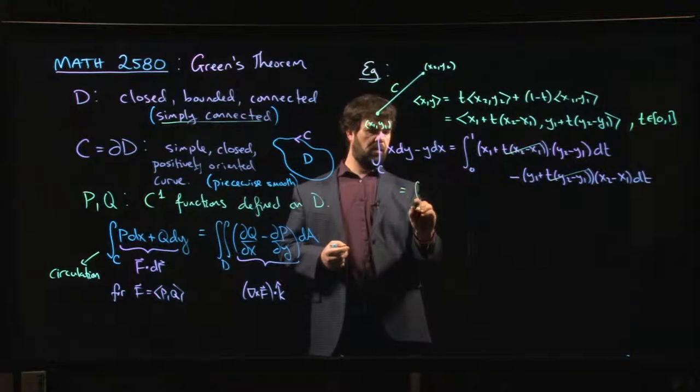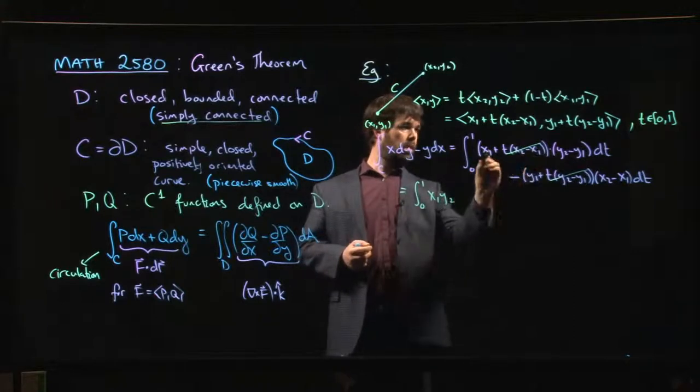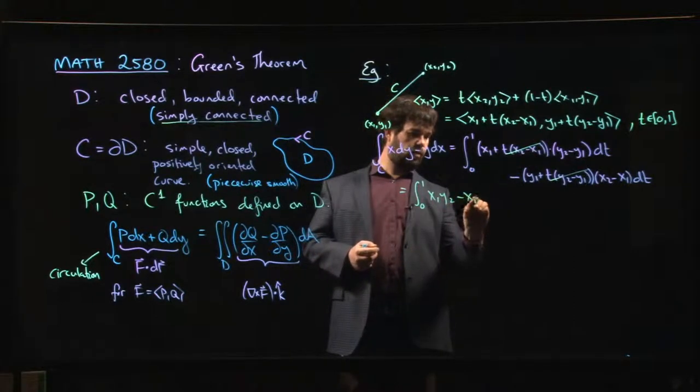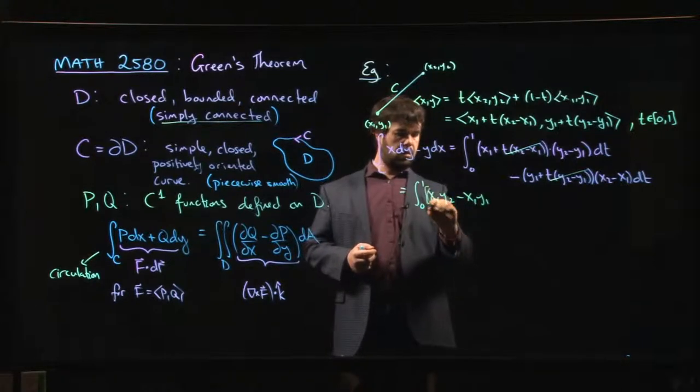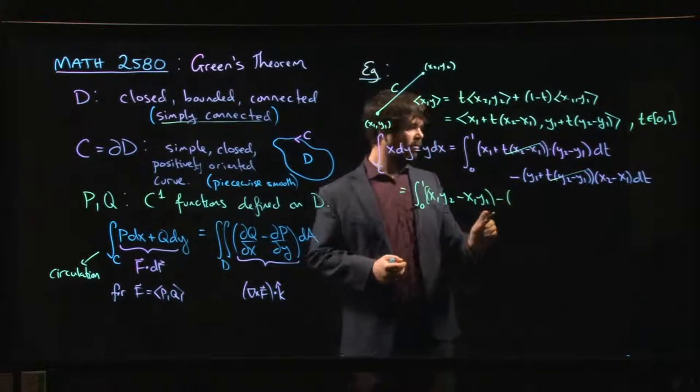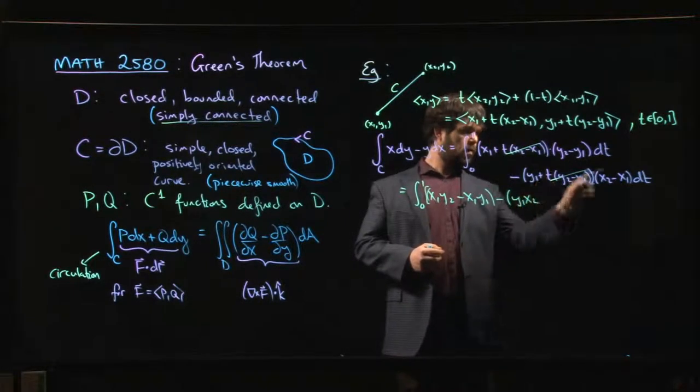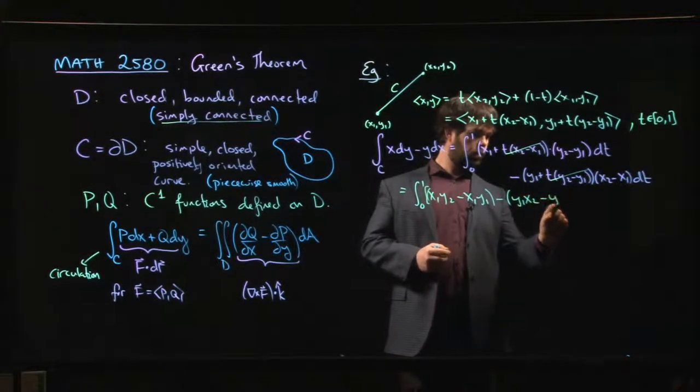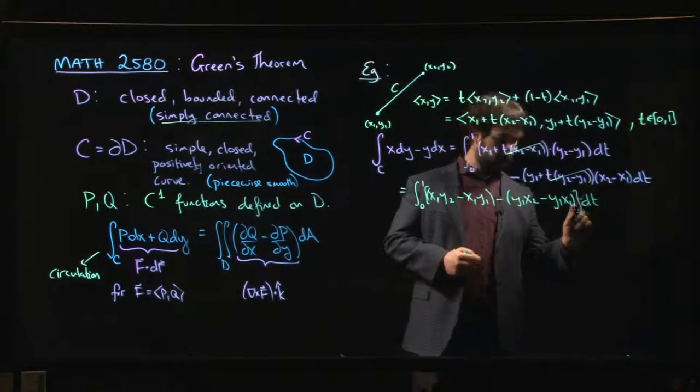And you're going to end up with the integral from 0 to 1 of x1 y2 minus x1 y1 minus y1 x2 minus y1 x1 dt.